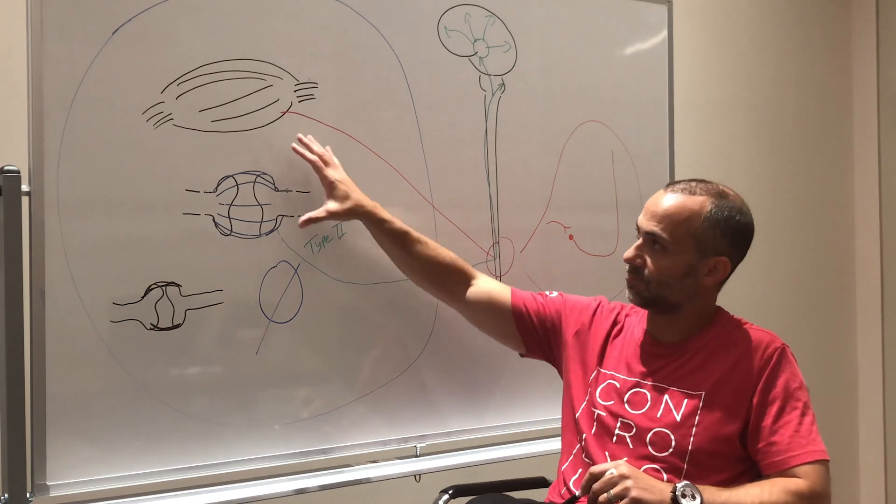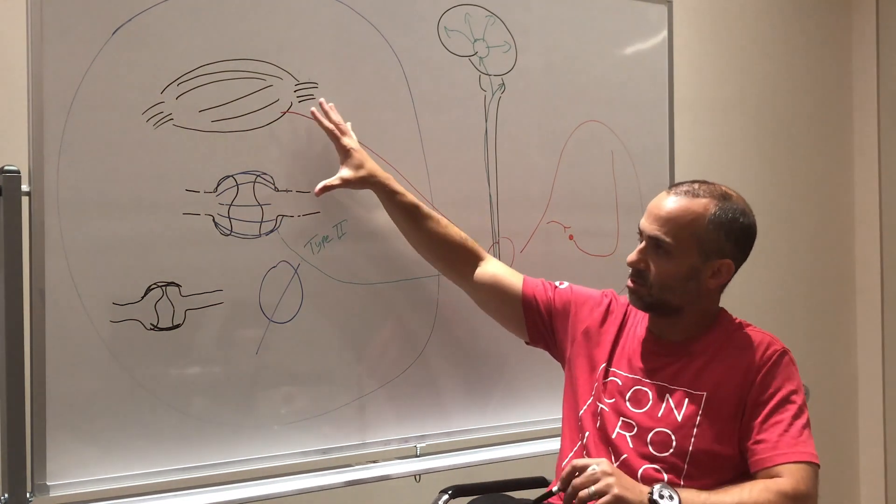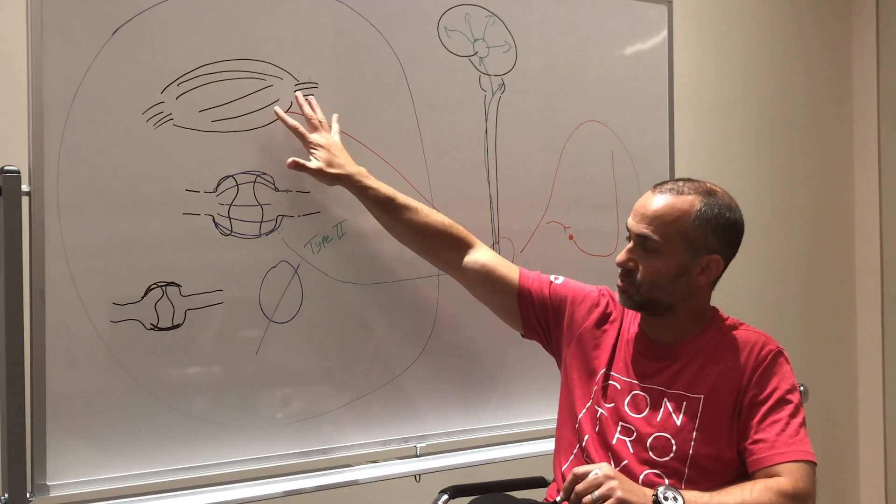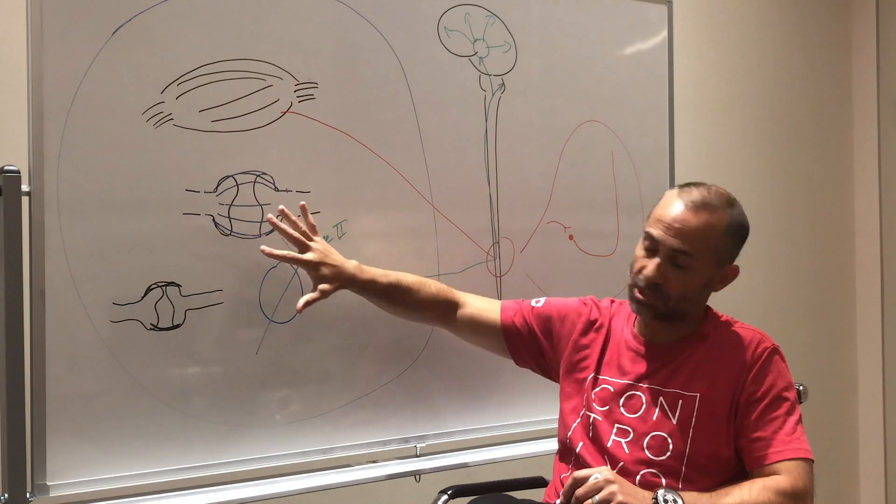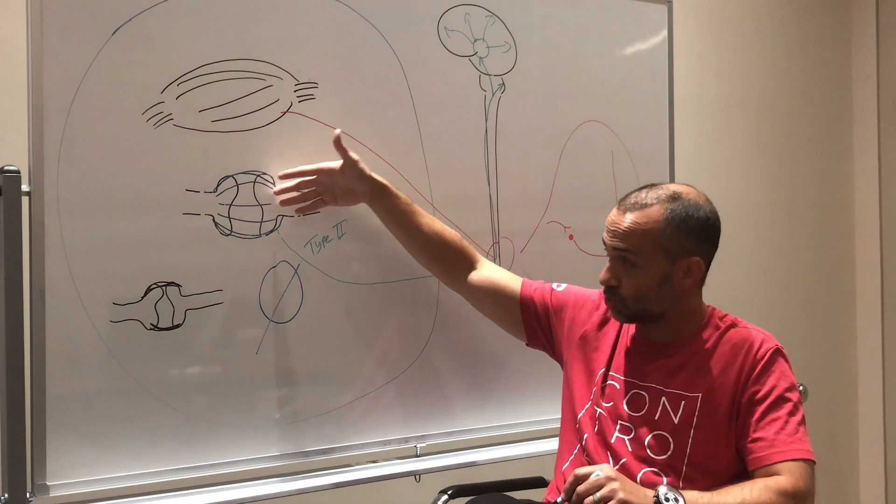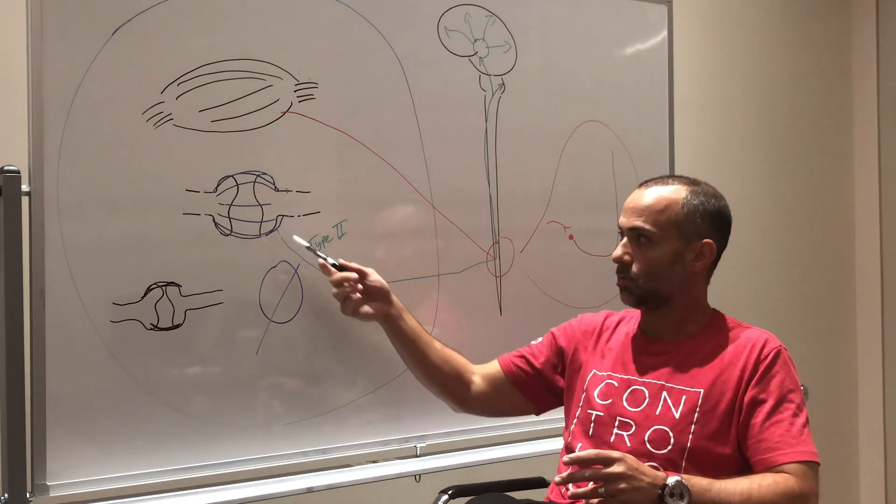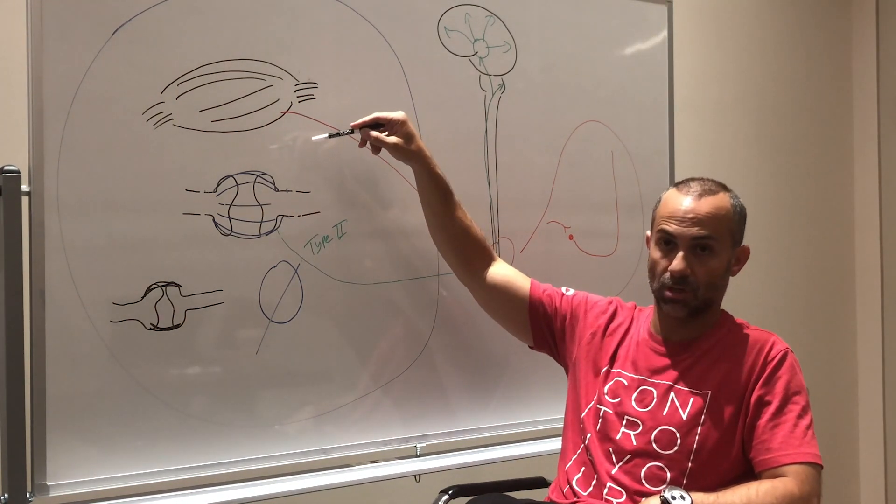In acute cases of spasm, a lot of times you can't even get to the joint to assess it. You just have to deal with this acute spasming so that the joint presents itself to you, and then you can subsequently determine what's going on in the joint. Is that causing the spasm to occur?